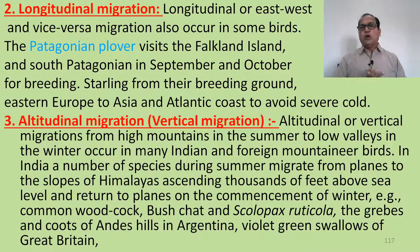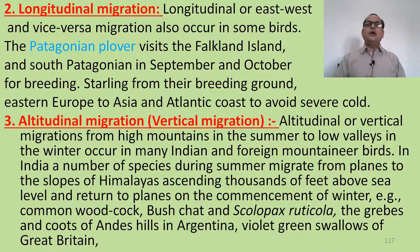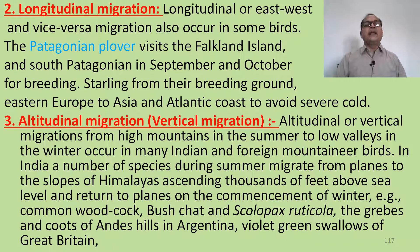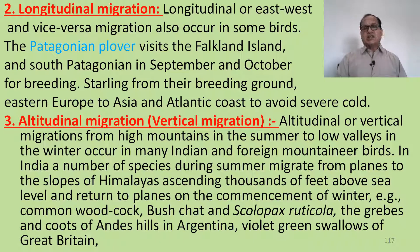Longitudinal migration is east-to-west or west-to-east movement. This type of migration also occurs in some kinds of birds. For example, the Patagonian plover visits the Falkland Islands and South Patagonia in September and October for breeding. Starting from their breeding grounds in Eastern Europe to Asia and the Atlantic coast, birds migrate longitudinally to avoid severe cold.